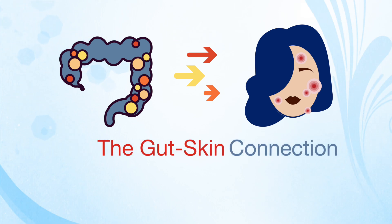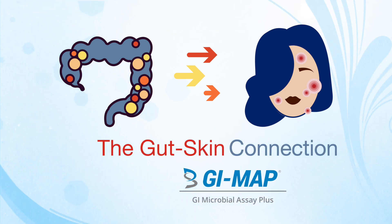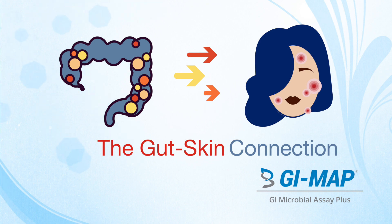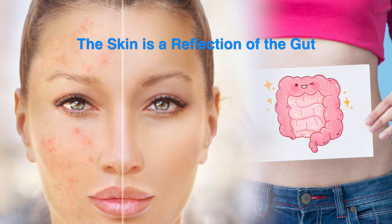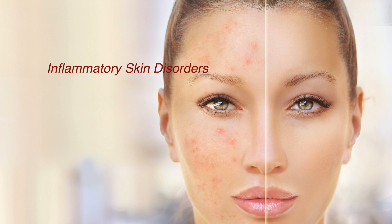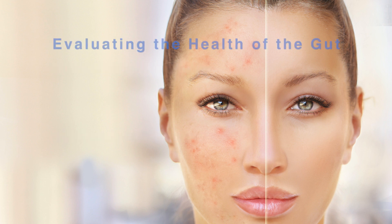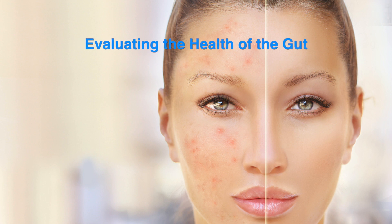I'd like to tell you a little bit about the gut-skin connection and how we can use a stool test like the GI Map to give us insight into how gut health may be impacting the health of the skin. We know that the skin is a reflection of the gut, so we want to evaluate the health of the gut whenever there is a skin condition. The gut microbiome appears to play a key role in the development of many inflammatory skin disorders, and the presence and overgrowth of certain organisms in the gut have also been implicated in autoimmune skin diseases. Stool testing can be used to identify dysfunction in the gut that may be contributing to skin conditions.